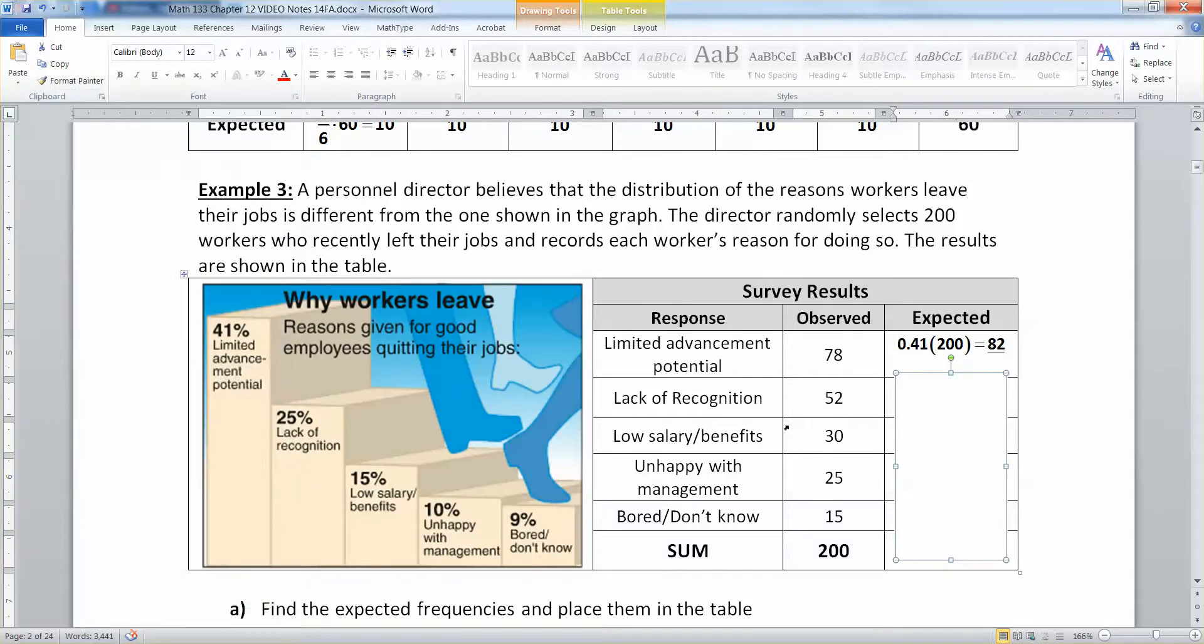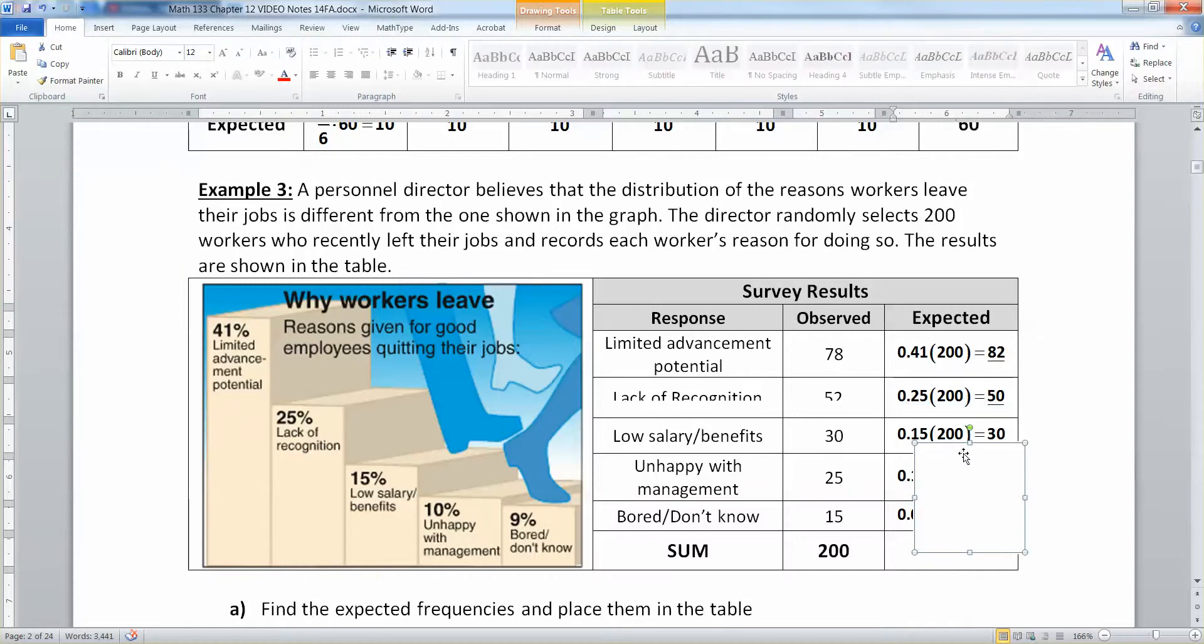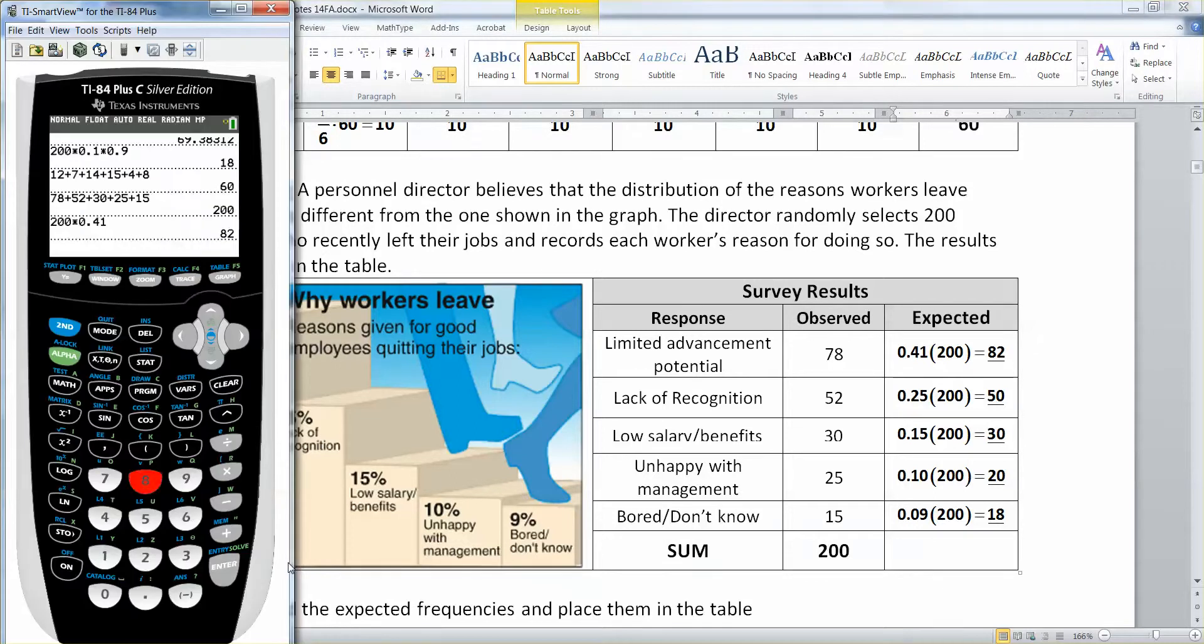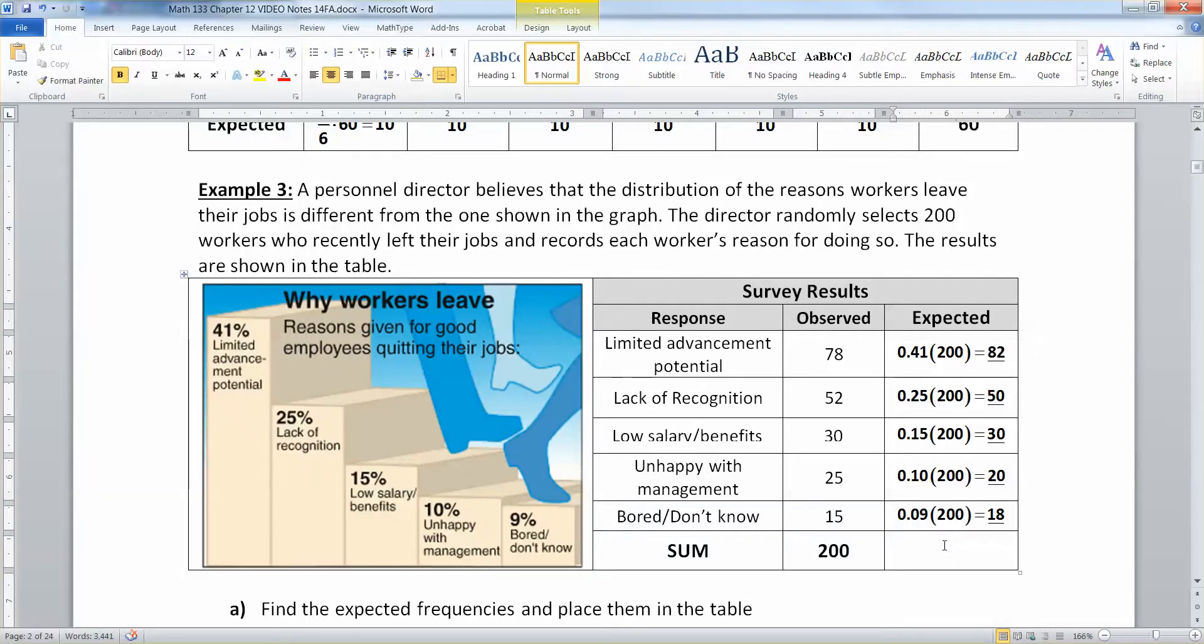If you don't believe me, let me show you. 200 times 0.41 is 82. Then lack of recognition you think should be about 25%. So you take 25% of 200 and you're going to get 50. Then you take 15% of 200 and you're going to get 30 and so on and so on. If you add up these numbers, if you've done this right, 82 plus 50 plus 30 plus 20 plus 18 is in fact 200. And that's good. You want it to be the same number in both groups right there. That's a way to check yourself.